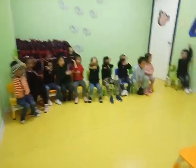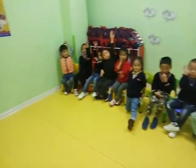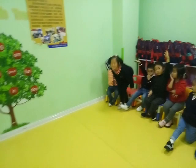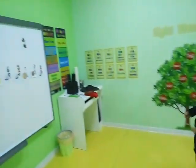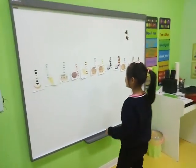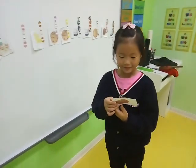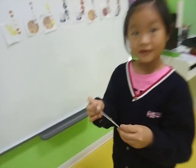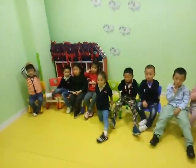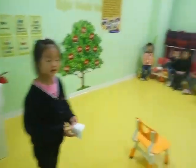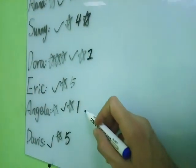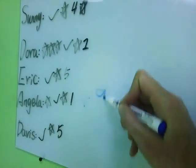First I would like to call Angela — come on over. Angela, what food do you like? Apple. Apple, very good. What number? You got 9! Angela got 9 points on the board. Thank you, Angela, you can sit down. Angela got 9 points.